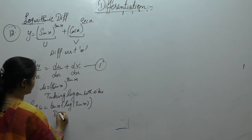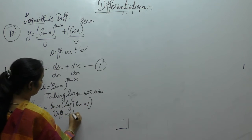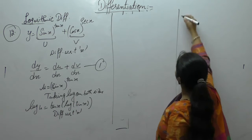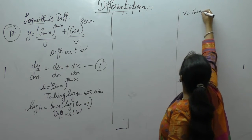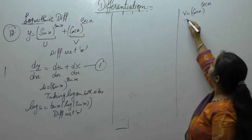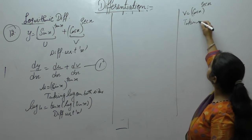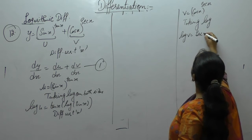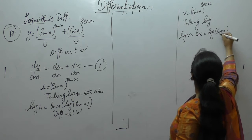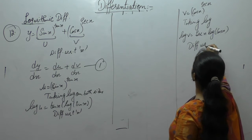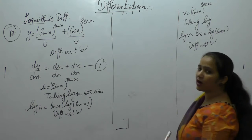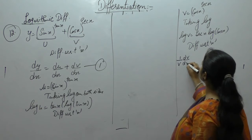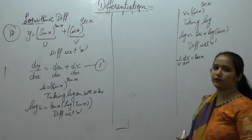Differentiate with respect to x. Now v = cos(x)^sec(x). Taking log: log(v) = sec(x) · log(cos x). Again differentiate with respect to x. Derivative of log(v) is 1/v · dv/dx. First function, derivative of log x is 1/x.